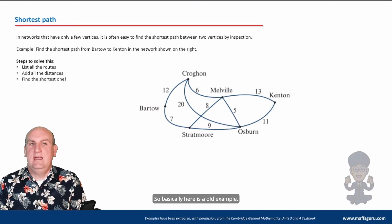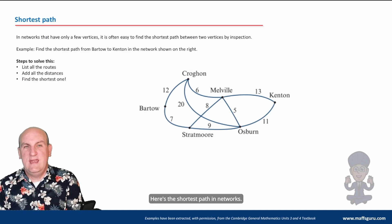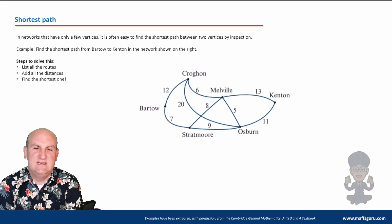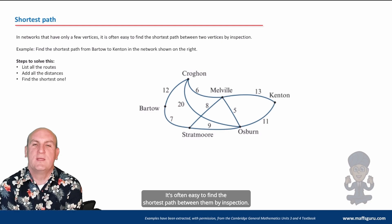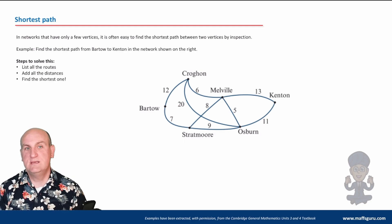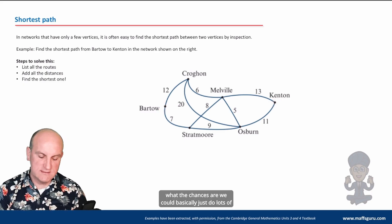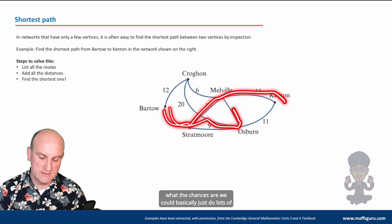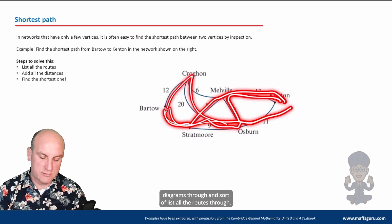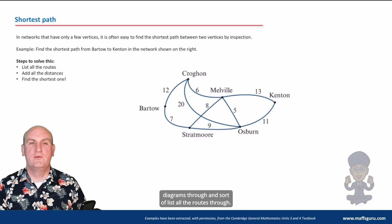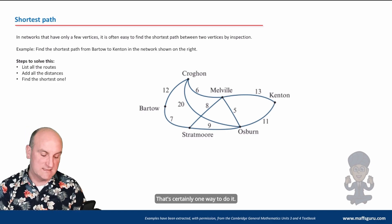So basically here is an old example: here's a shortest path. In networks we only have a few vertices, it's often easy to find the shortest path between them by inspection. Right, so if we wanted to find the shortest path between Bartow and Kenson in this one here, the chances are we could basically just do lots of diagrams through and sort of list all the routes through. That's certainly one way to do it, as I say here.